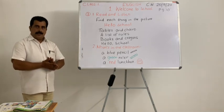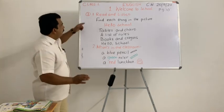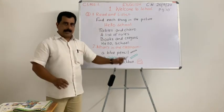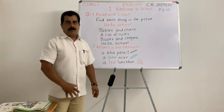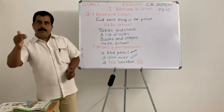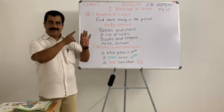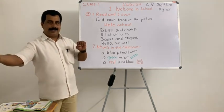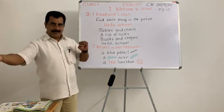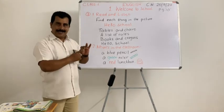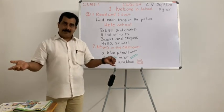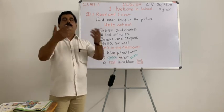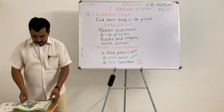Did you understand? I hope so. We have listened about the school. Second — what is in the classroom? Can you write or name 10 things from your classroom? Like: book, crayons, lunchbox, tables, chairs, rules, ABC chart, clock, sign, AC, whiteboard, blackboard, computers — many things you can find in your classroom.